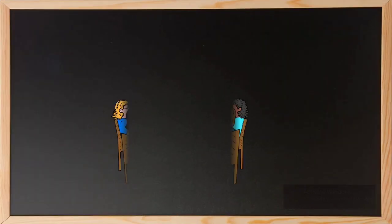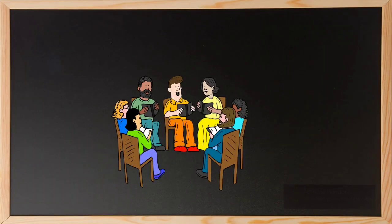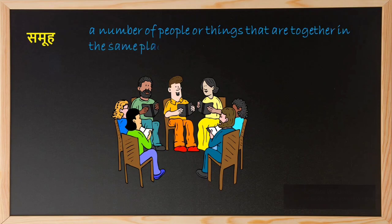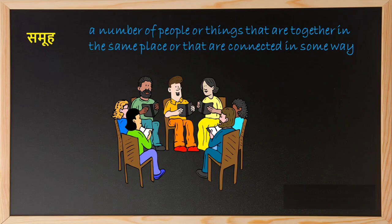You imagine something like this, right? A group is nothing but a number of people or things that are together in the same place or that are connected in some way. So what is group theory in mathematics? Let's find out.